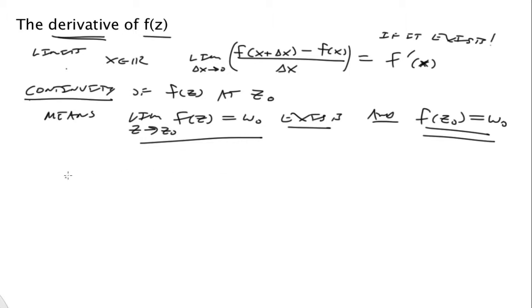And of course, continuity is crucial. In order to take a derivative, if a derivative exists at a point z0, then f at z0 must be continuous. Okay, so let's go into the definition.